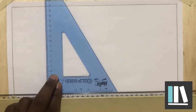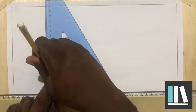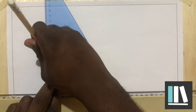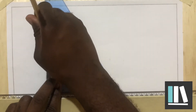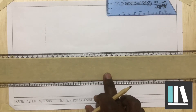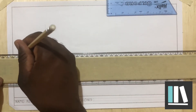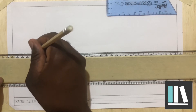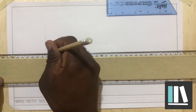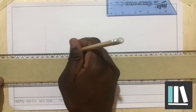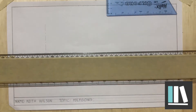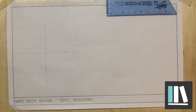I'm going to take my set square and draw a vertical center line. When drawing the center line I'm using long strokes, short strokes — long stroke, short stroke, long stroke, short stroke. This is my vertical center line. I'll now proceed to draw the horizontal center line across.